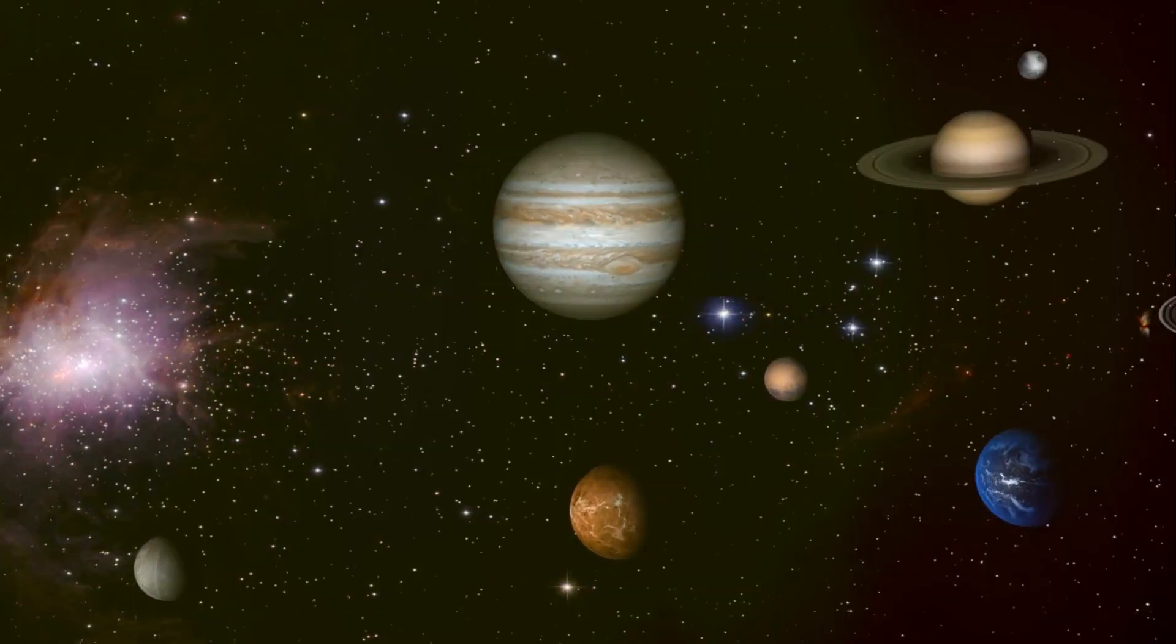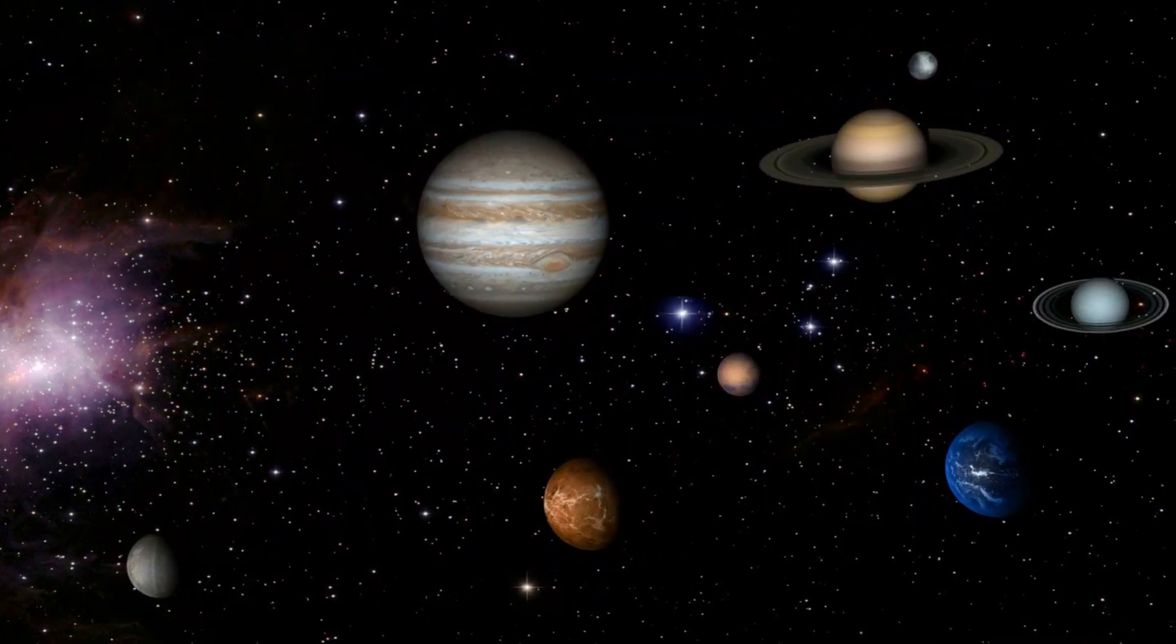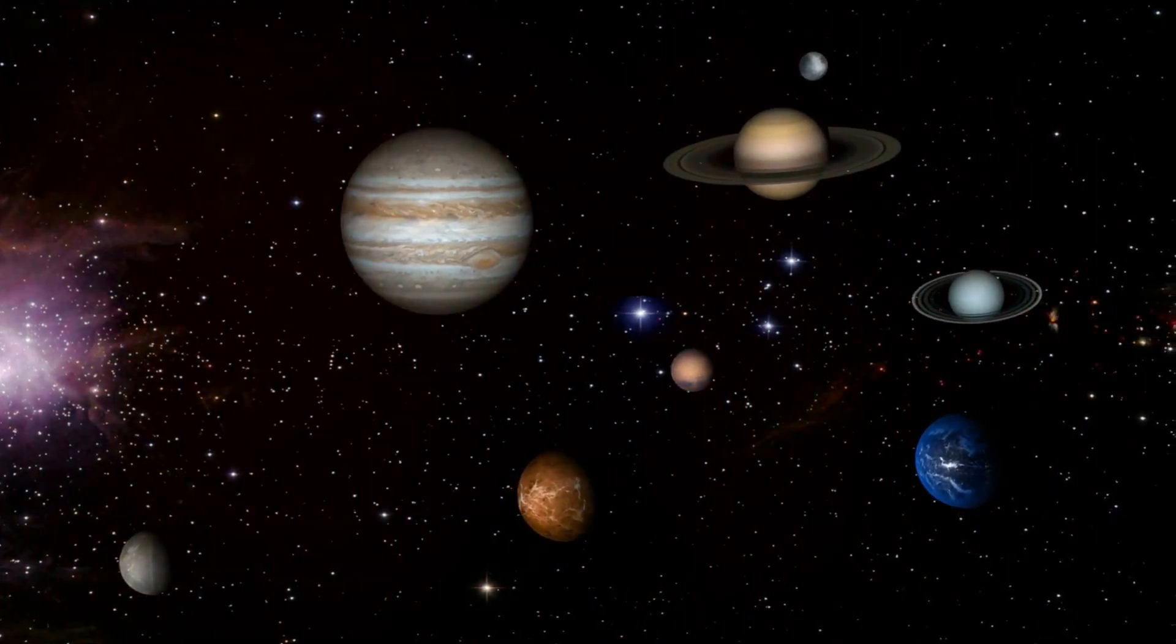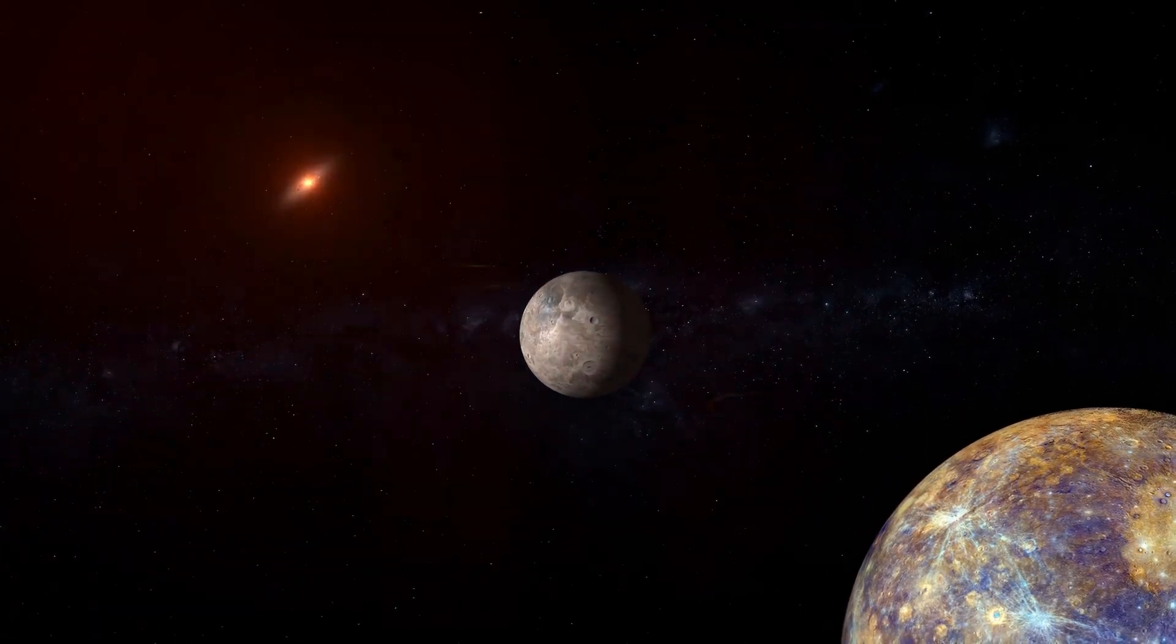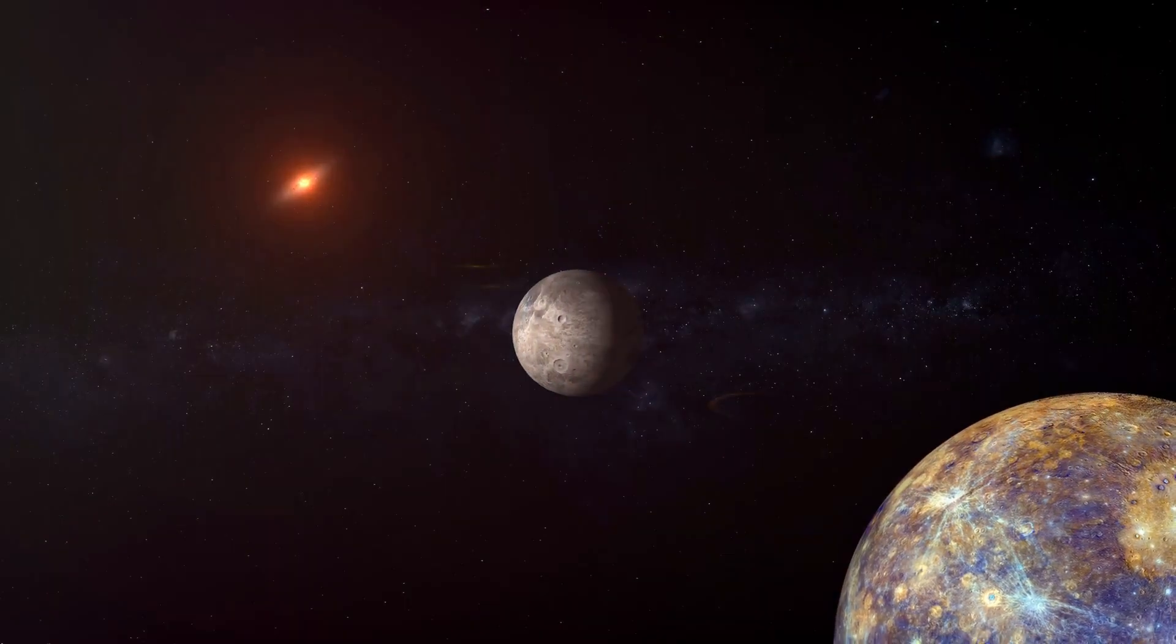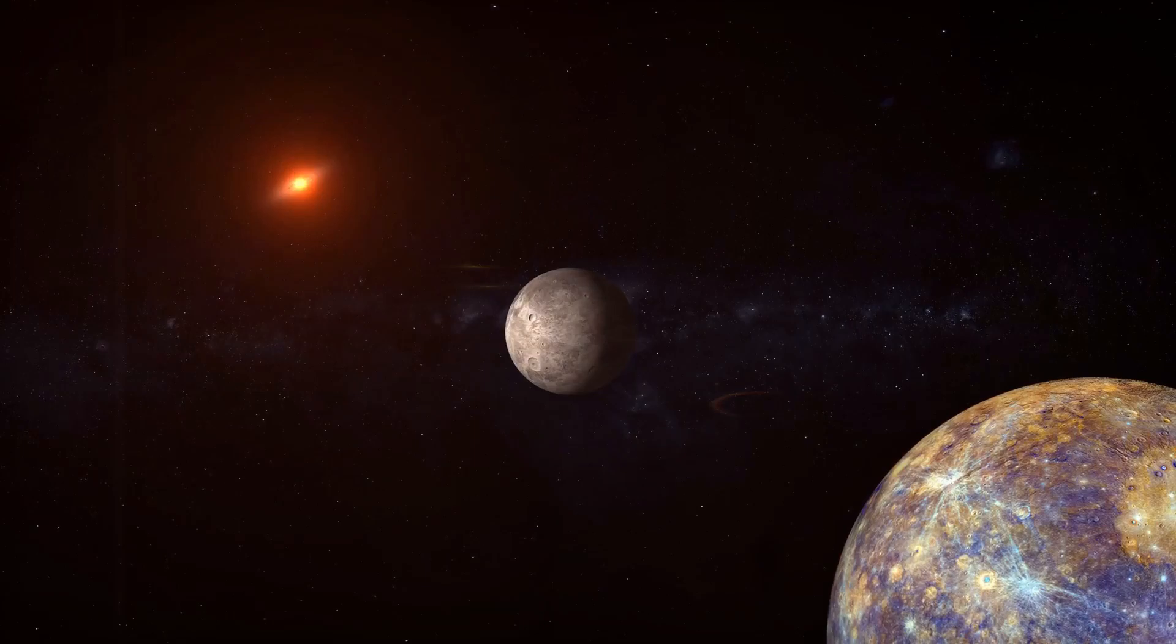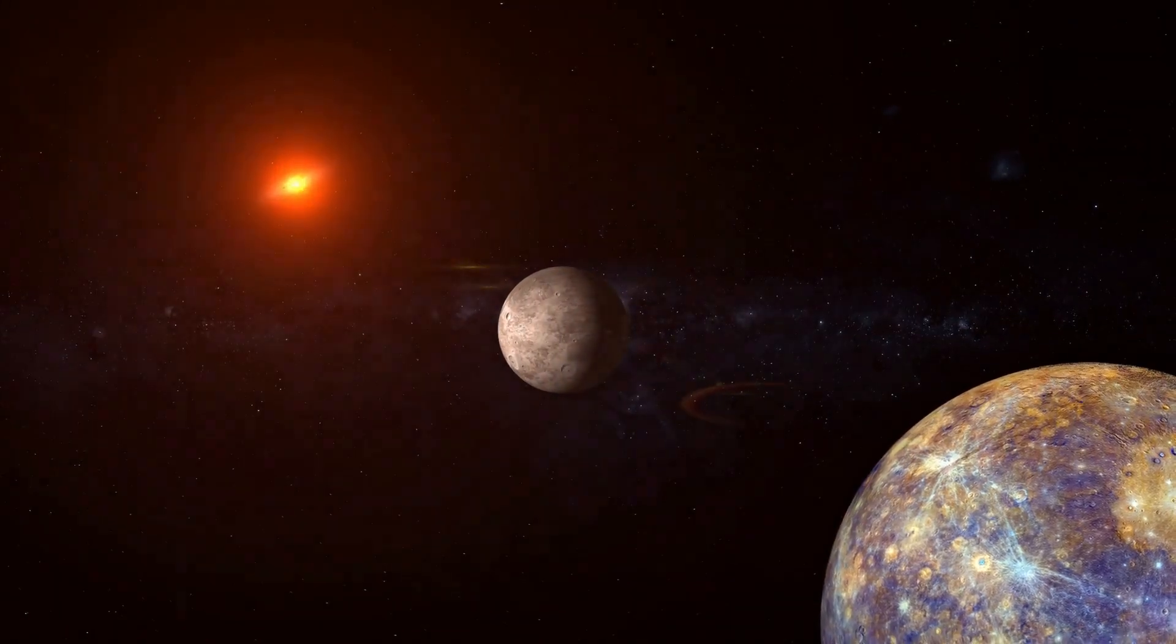However, contrary to what you might think, this doesn't mean a cataclysmic end for the stars and planets within these galaxies. Due to the vast distances between stars, it's highly unlikely that our solar system, for instance, would come into direct contact with another star or its planetary system. In fact, for us here on Earth, the most notable effect of this cosmic event might be a change in our night sky. The stars we're used to seeing could shift and change, replaced by new constellations from Andromeda.